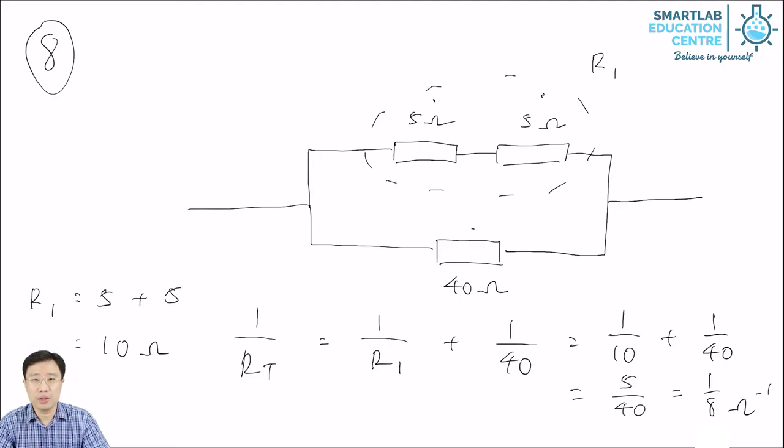Remember that this is not the final answer. You have to take the reciprocal of 1 over 8 to get RT. So RT is equal to 8 ohms. This is the effective resistance of this arrangement.